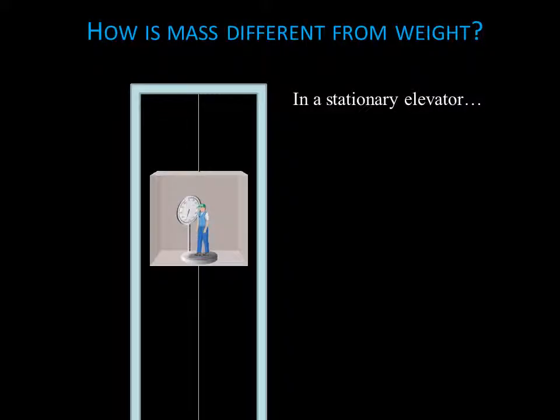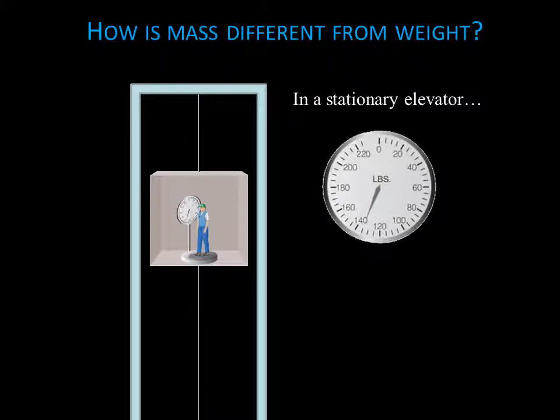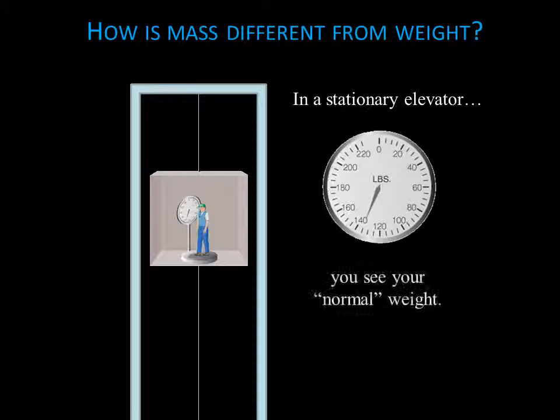To understand the difference between mass and weight, imagine standing on a scale in an elevator. Your mass will be the same no matter how the elevator moves, but your weight can vary. When the elevator is stationary or moving at constant velocity, the scale reads your normal weight.